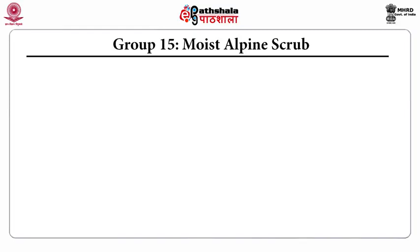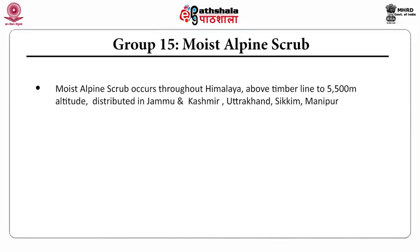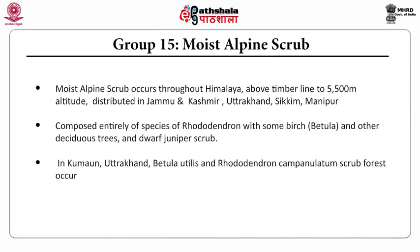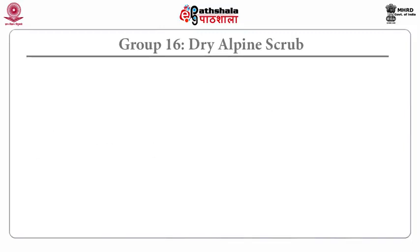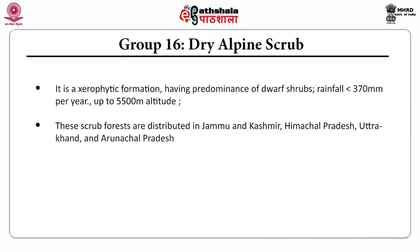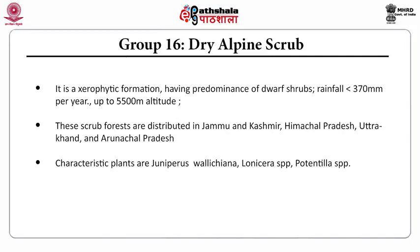Group 15 is the moist alpine scrub. Moist alpine scrub occurs throughout the Himalaya above the timber line to 5,500 meter altitude. Distributed in Jammu and Kashmir, Uttarakhand, Sikkim, and Manipur. Composed entirely of species of Rhododendron with some birch and other deciduous trees and dwarf juniper scrub. In Kumaon, Uttarakhand, Betula utilis and Rhododendron campanulatum scrub forest occur. Group 16 is the dry alpine scrub — a xerophytic formation having predominance of xerophytic shrubs, rainfall less than 370 millimeters per year, up to 5,500 meter altitude. These scrub forests are distributed in Jammu and Kashmir, Himachal Pradesh, Uttarakhand, and Arunachal Pradesh. Characteristic plants are Juniperus wallichiana, Tanacetum species, and Potentilla species.